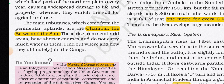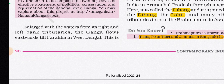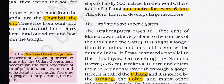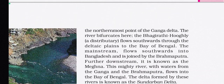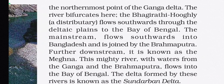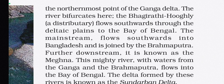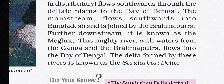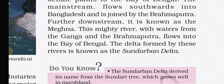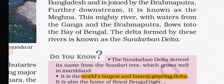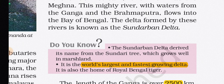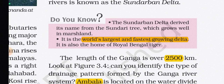The Namami Gange Programme is an integrated conservation mission approved as a flagship programme by the Union Government in June 2014, to accomplish effective abatement of pollution and rejuvenation of the national river Ganga. Enlarged with tributary waters, the Ganga flows eastward till Farakka in West Bengal — the northernmost point of the Ganga delta — where it bifurcates. The Bhagirathi-Hooghly flows southward through the deltaic plains to the Bay of Bengal, while the mainstream flows into Bangladesh and joins the Brahmaputra to form the Meghna.